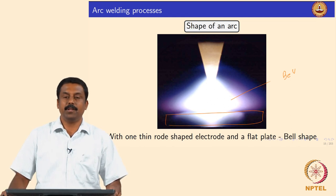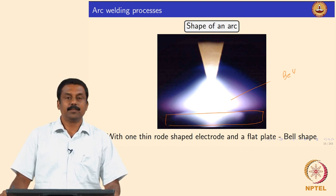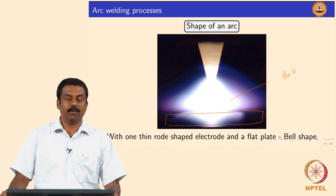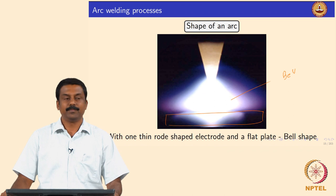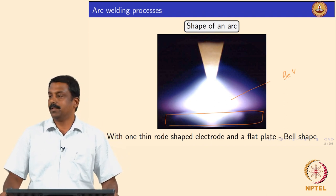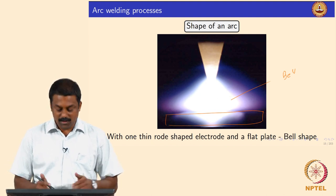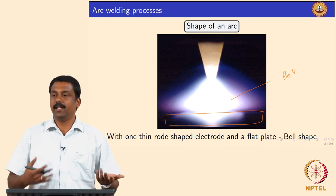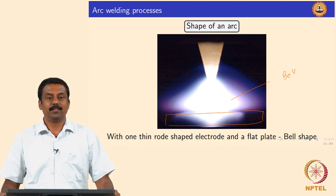Whatever discharge is sustained inside the arc — the white bright regions — involves a continuous discharge leading to collisions of energy carriers. The energy carriers in this case are electrons and ions. The cathode emits electrons; emitted electrons from the cathode would travel to the anode.